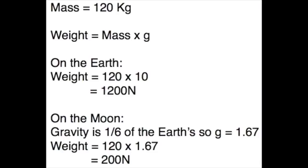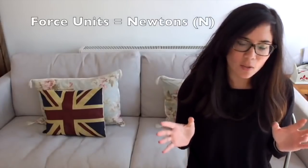However, weight depends on gravity, and gravity varies. So on Earth the astronaut will have a weight of 1200 newtons, but because gravity is so much less on the Moon, his weight will only be about 200 newtons. To summarise: a force is a push or pull that causes an object to speed up, change direction or change its shape. Force is measured in newtons, and force diagrams use arrows where the size of the arrow represents the magnitude of the force.